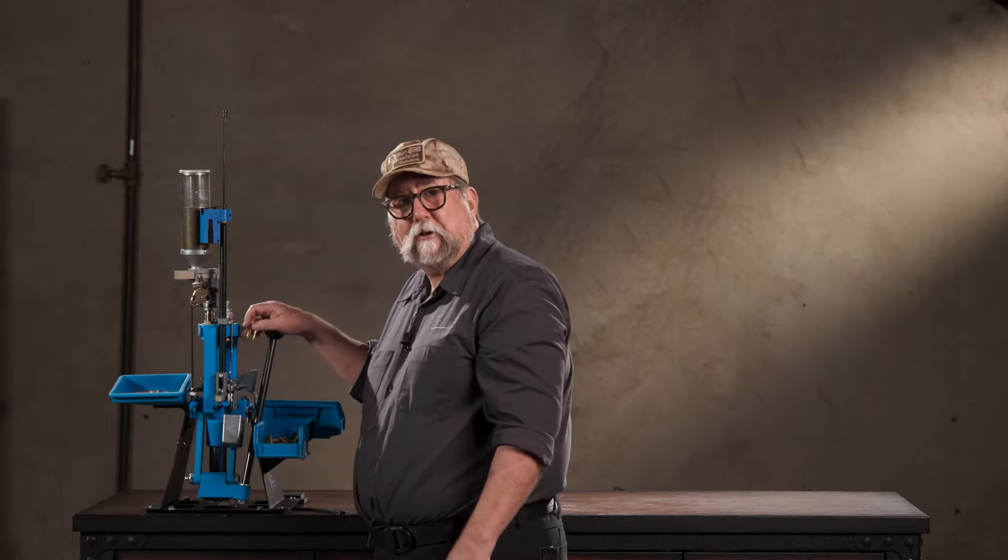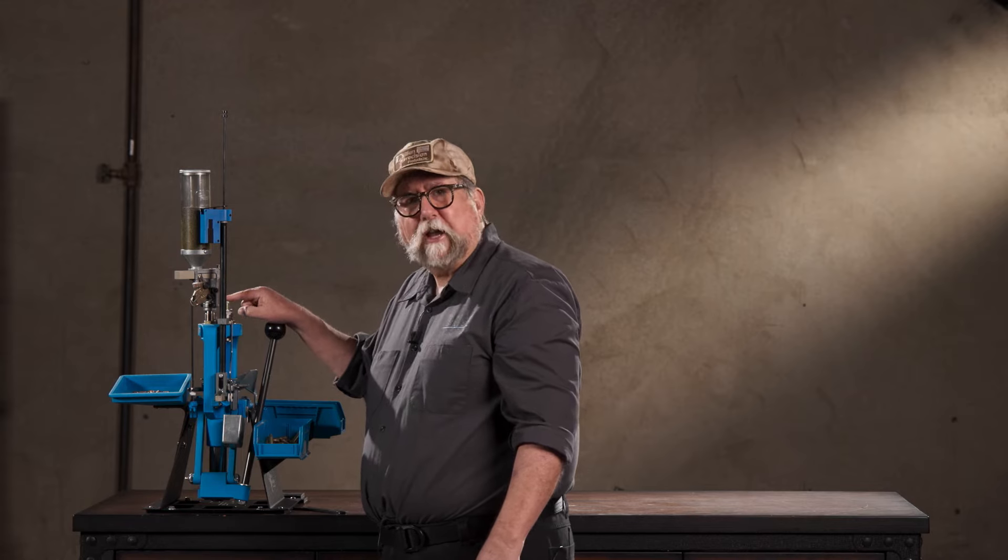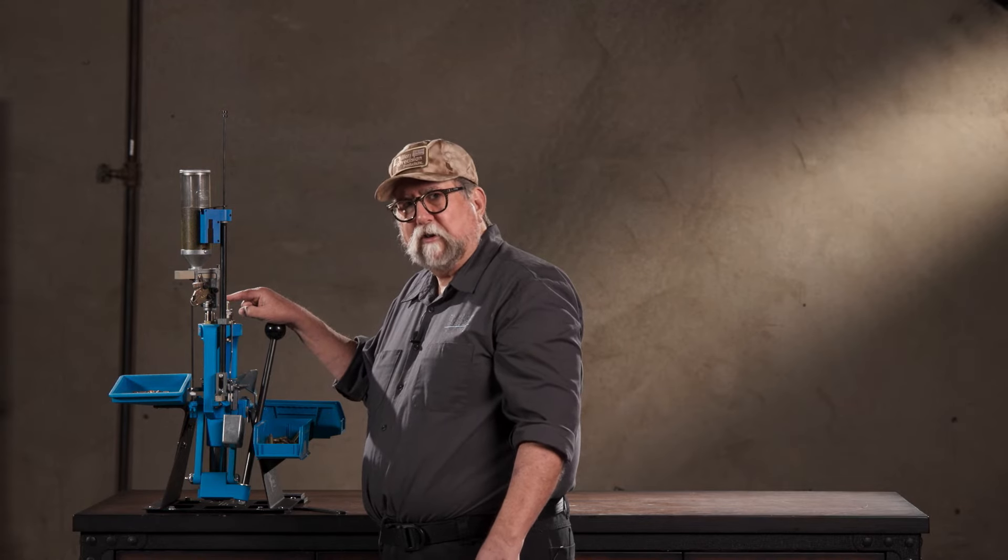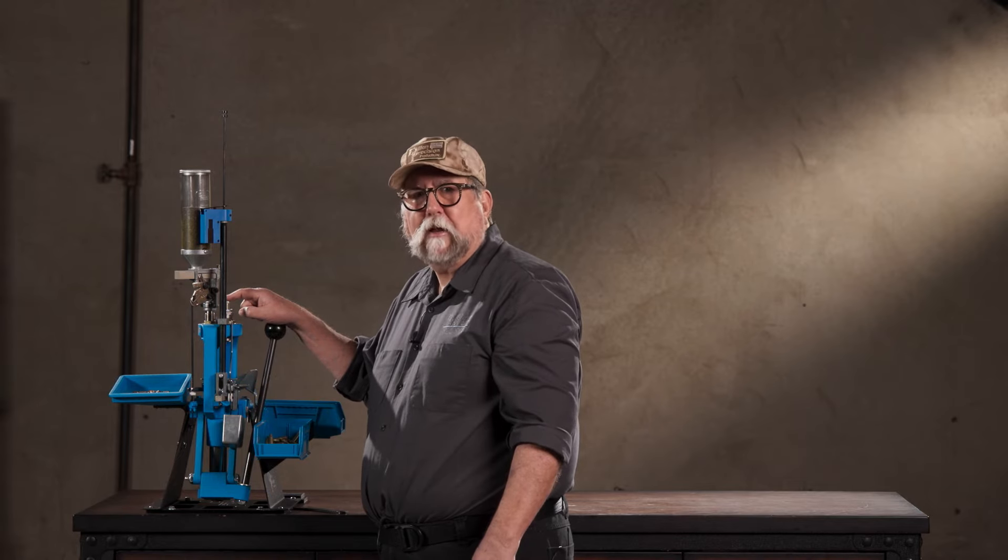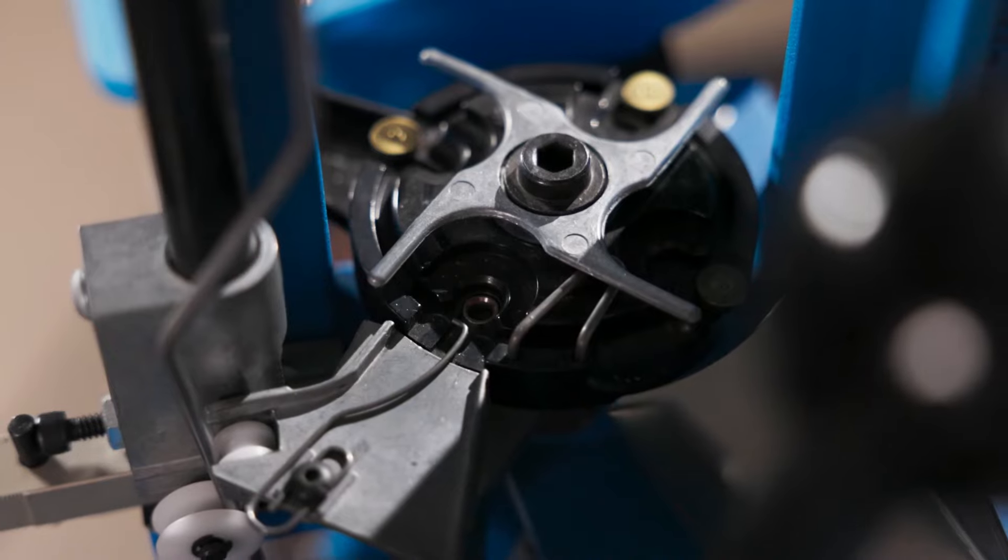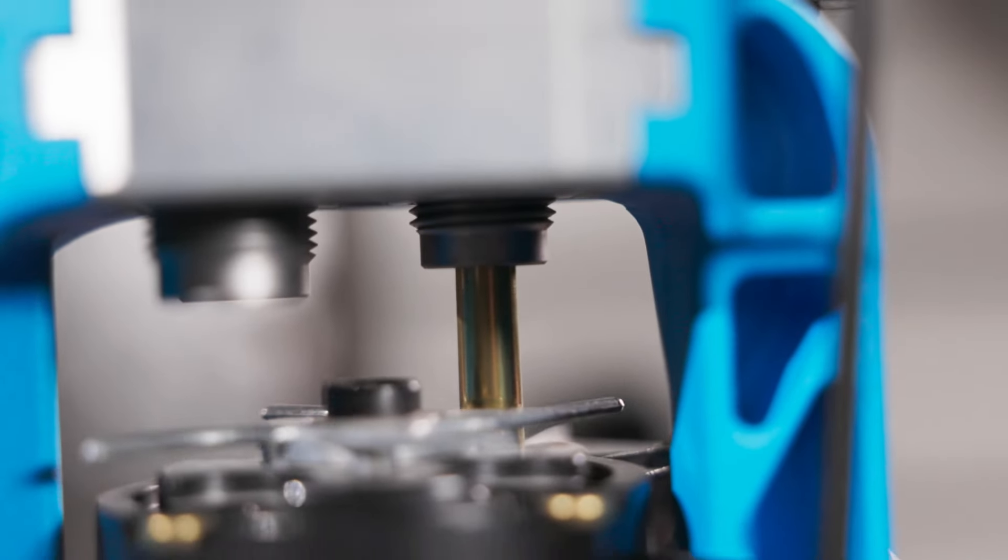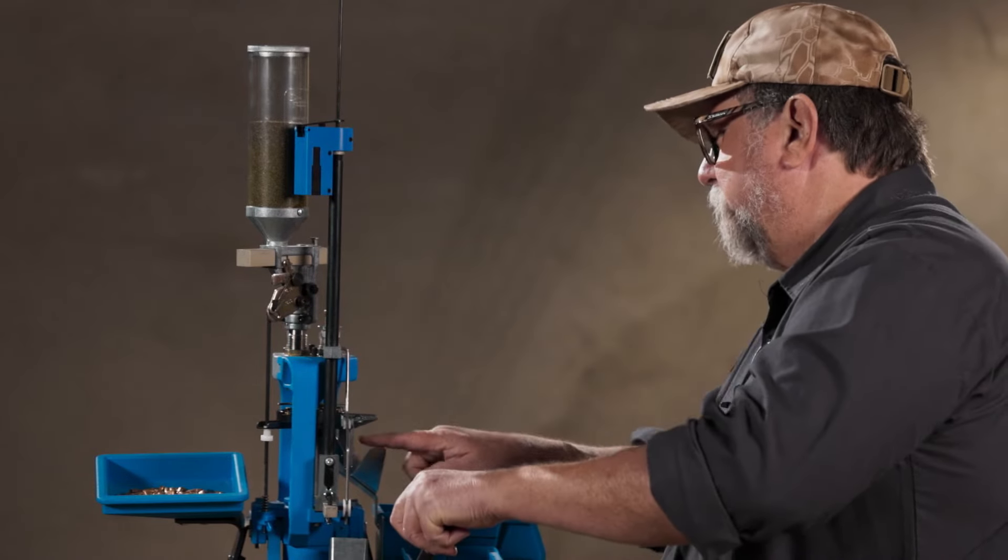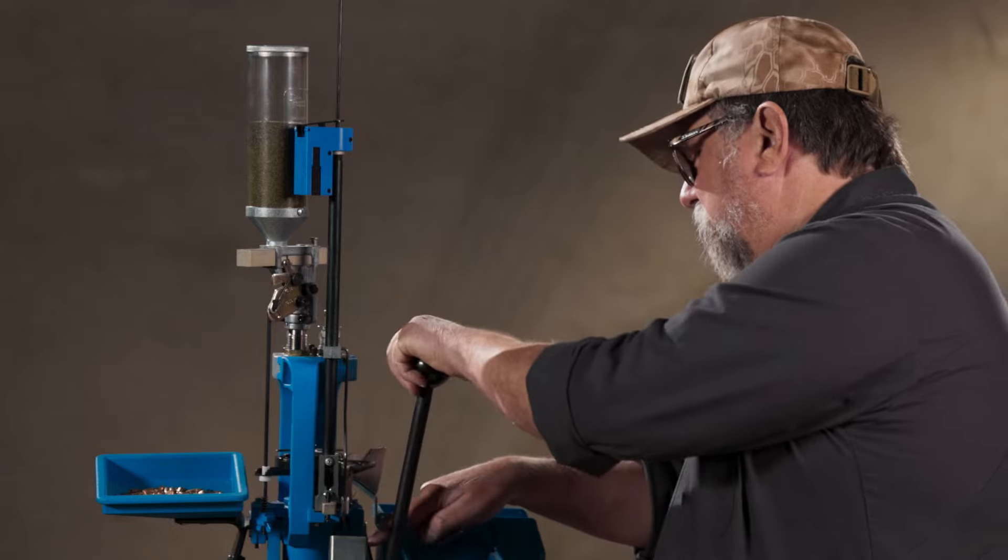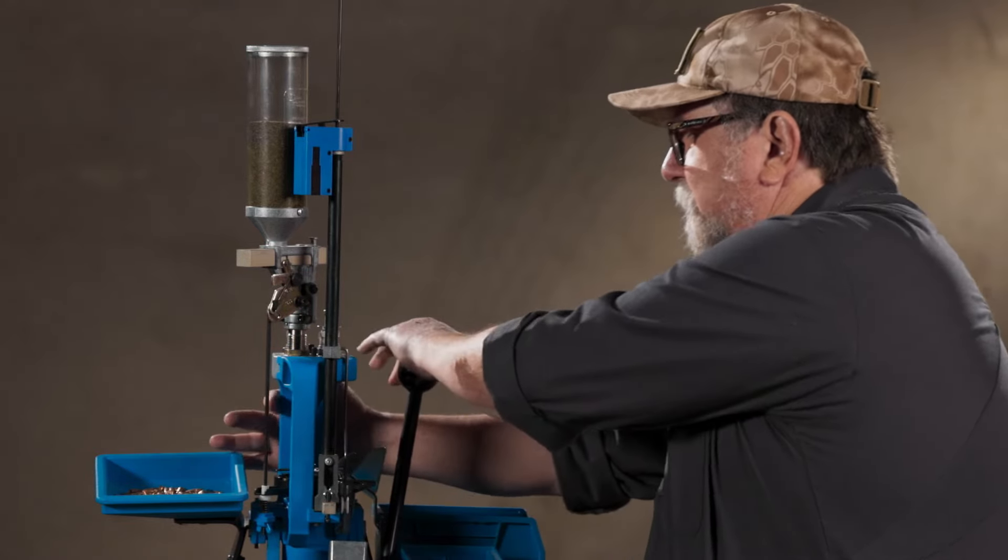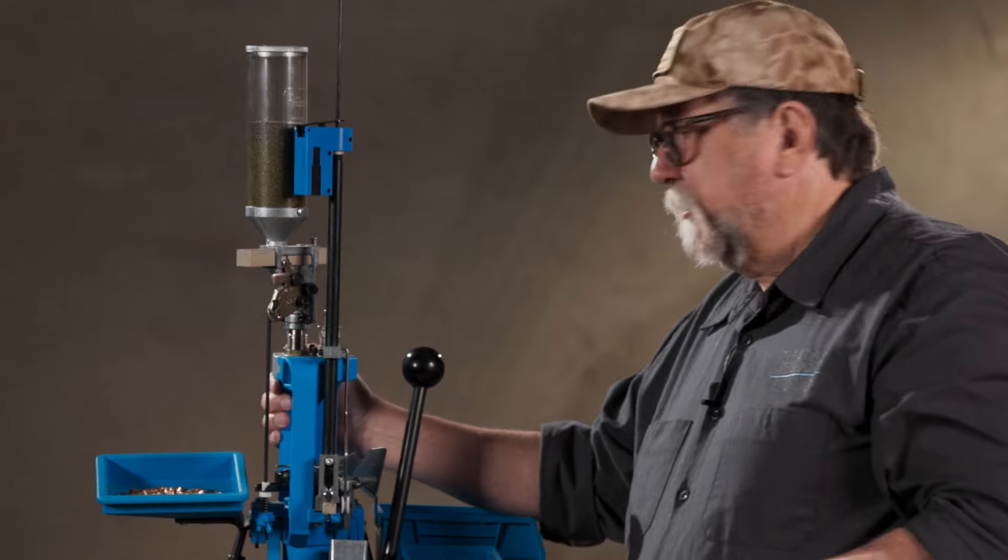Now if that does happen to you, the Dillon rifle dies do have a built-in stuck case remover, so you don't have to use a drill and a tap and make a mess out of extracting the stuck case out of the die. You slide the case into the shell plate, pull the handle down, resizes, deprimes. Spent primer drops into this cup, ends up dropping into this bin. Push forward on the handle, seat your primer into the case.